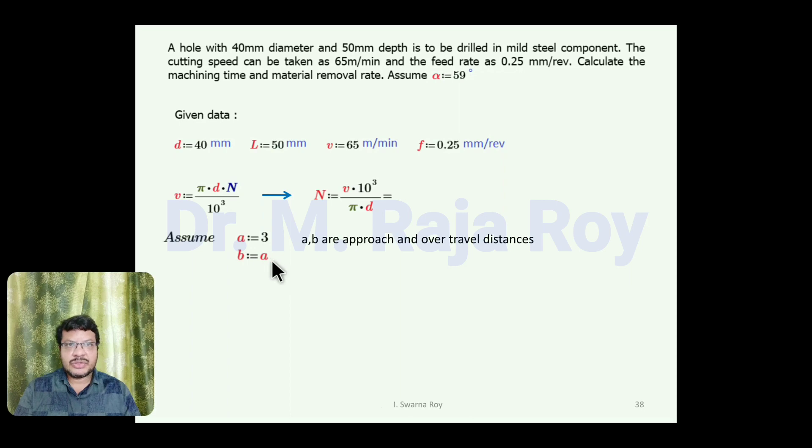A and B values are not given. You can assume A and B are equivalent, 3 mm. You can assume or neglect because it's not given in the problem. C value: how to calculate? Because α is given, C equals D divided by 2 tan α. Machining time T equals L plus A plus B plus C divided by F times N. Material removal rate equals π/4 D² F times N. All the parameters are given. Just do the substitution and find the answer.